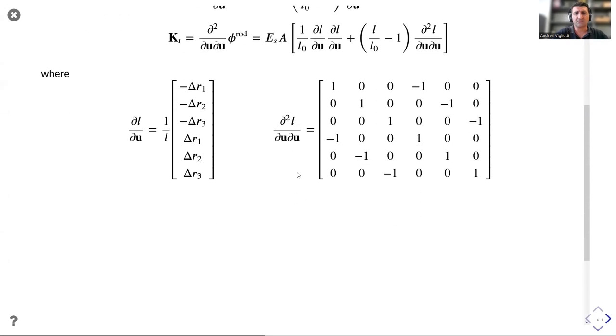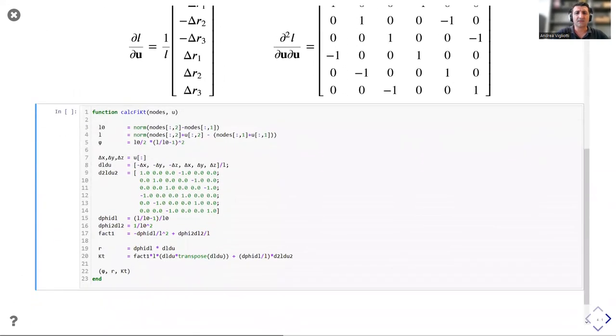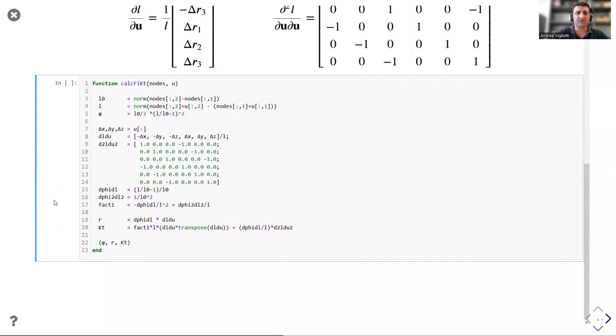We can find the entries of the residual force vector and the tangent stiffness matrix by taking the analytical derivatives of the free energy with respect to the nodal degrees of freedom. And if we want to use this in a finite element program, we will probably write a function like this.